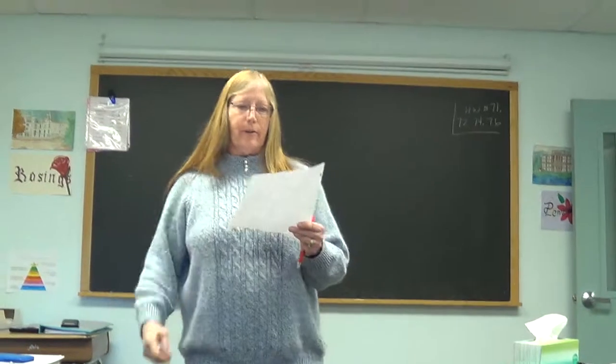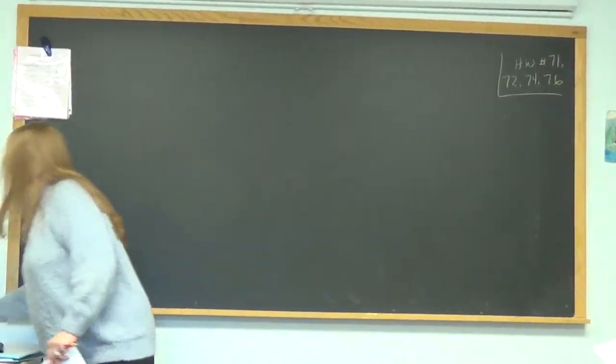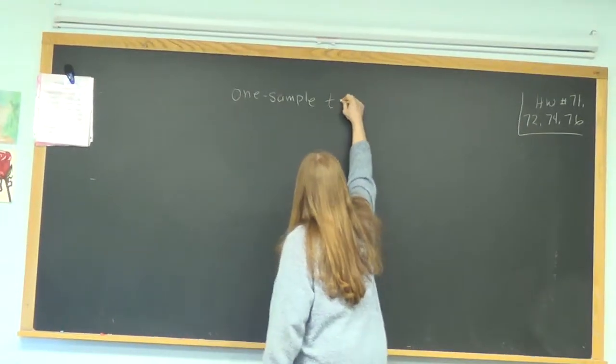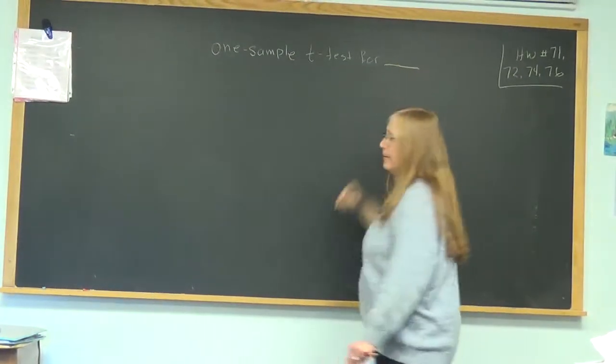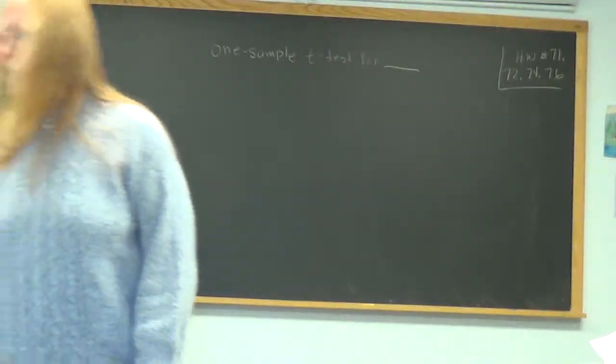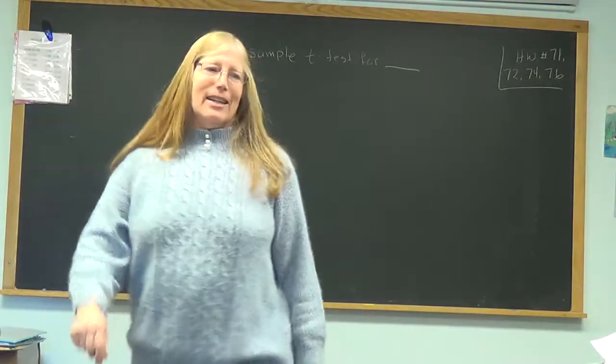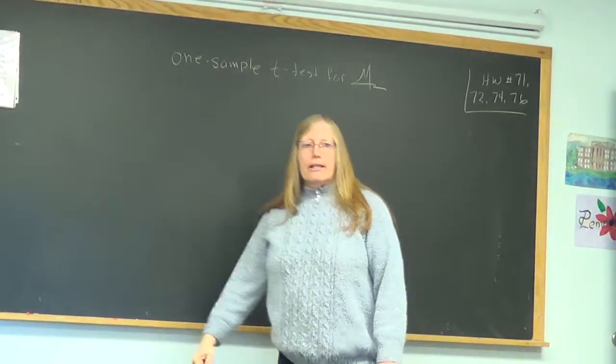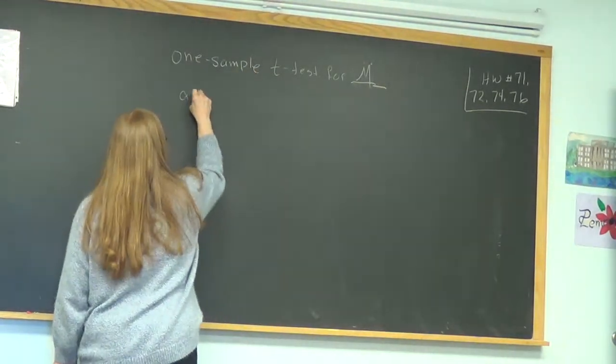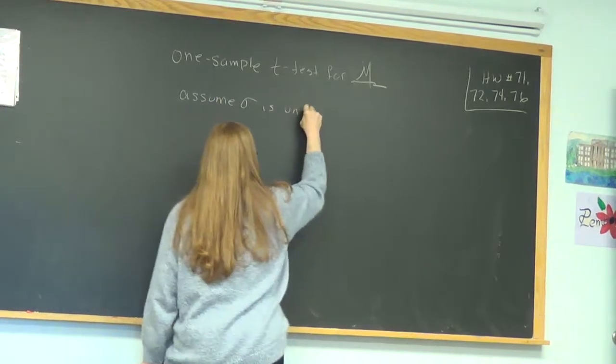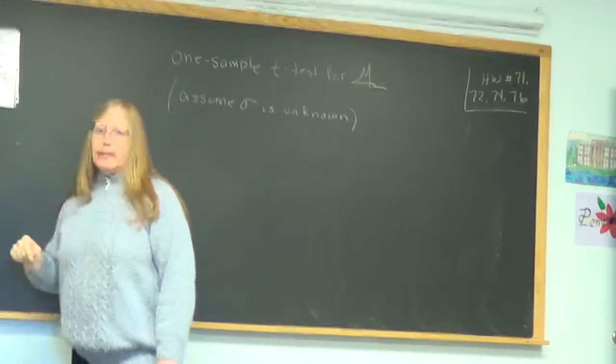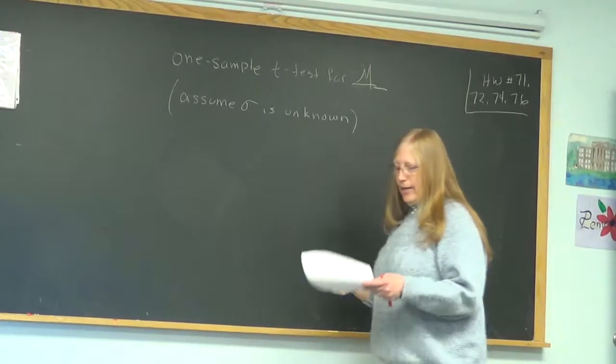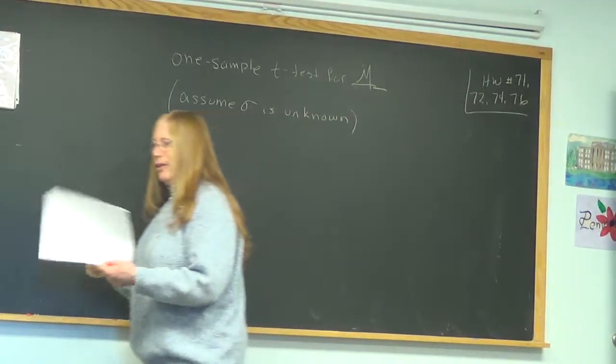Let's look at how you do all this. We're going to do a one sample t-test. Four μ. We are going to assume that standard deviation for the whole thing is unknown. If it is known, we do it differently. So here, you can probably teach it before I do.